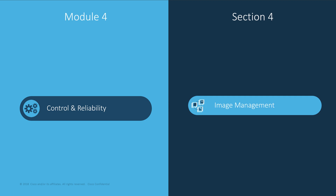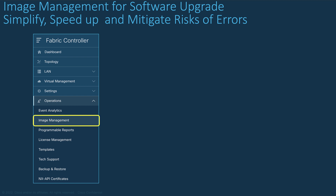Let's now have a look at the software image management. The image management functions, which is part of the control, the reliability and the daily operations, automates the upgrade process for the image software and patches. To better understand the matter and usefulness of the image management, let's see why, what and when to use it.